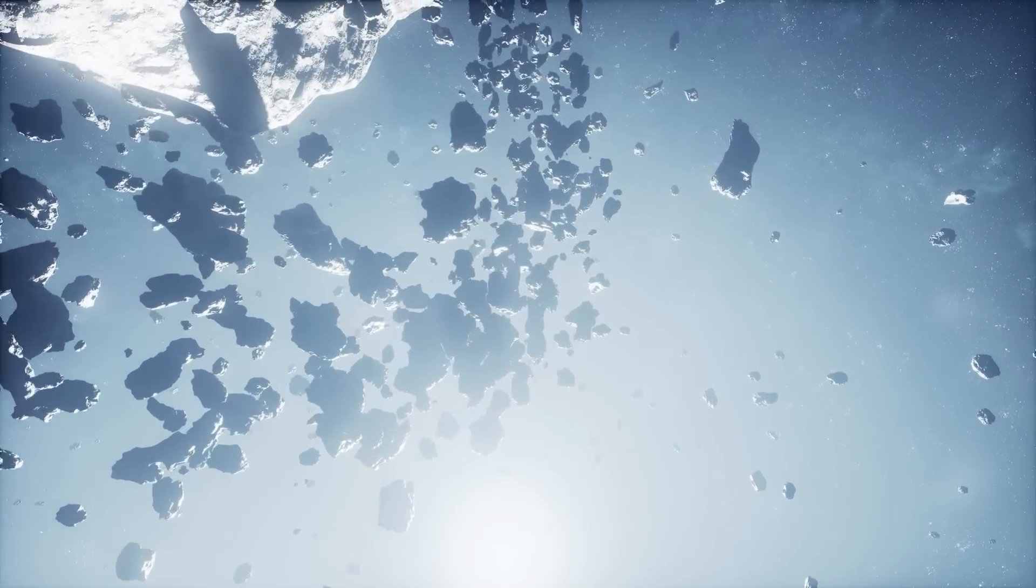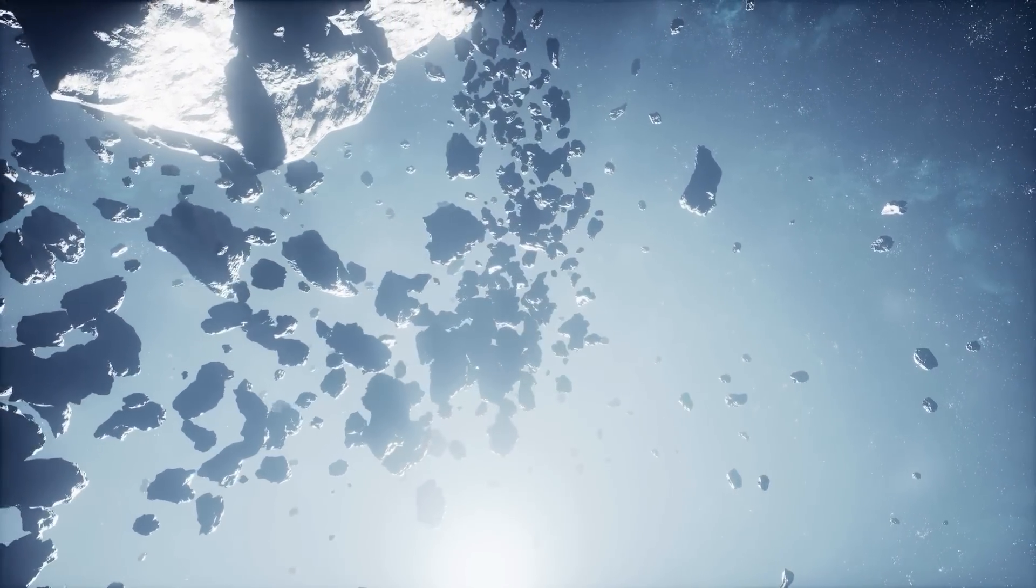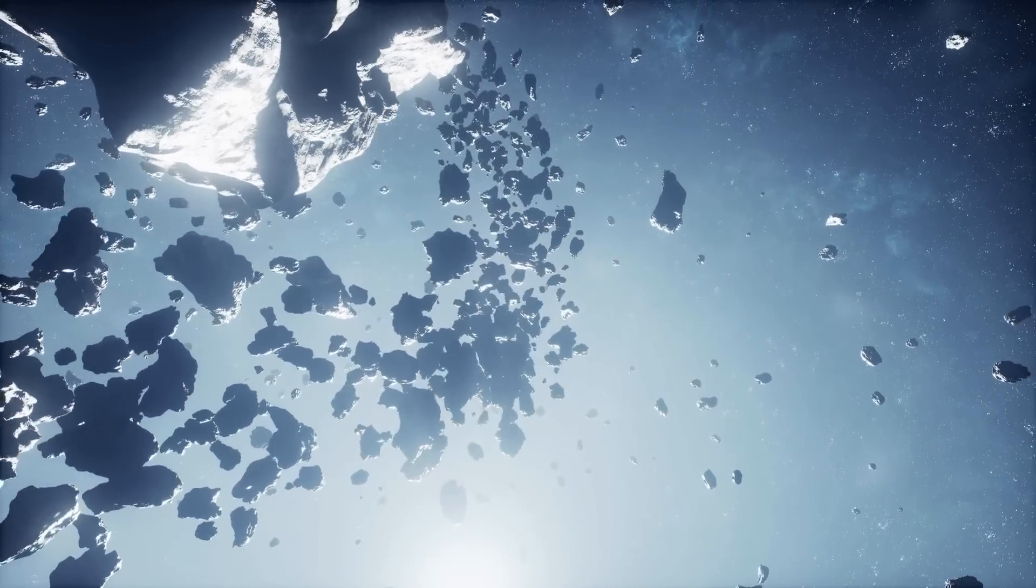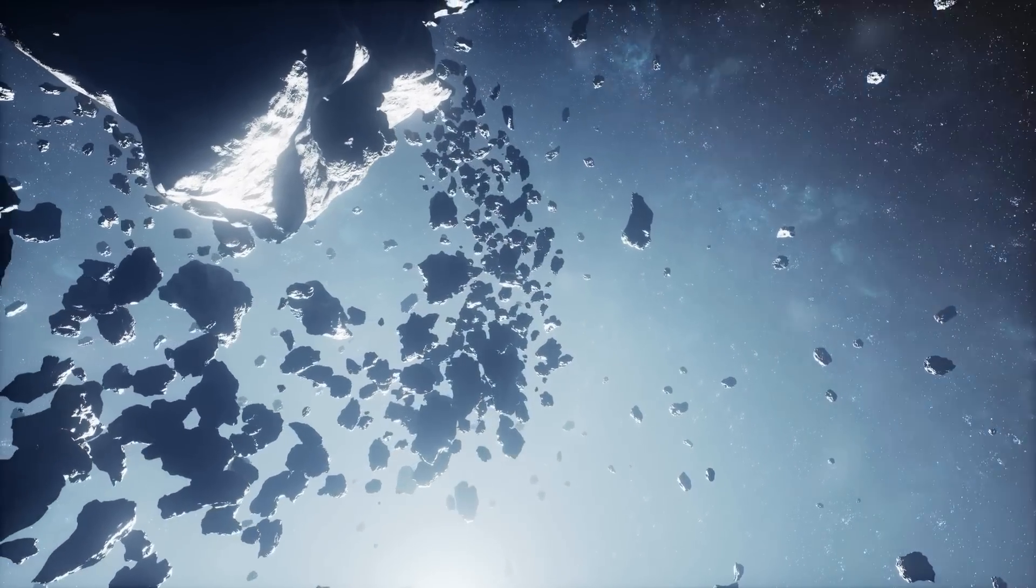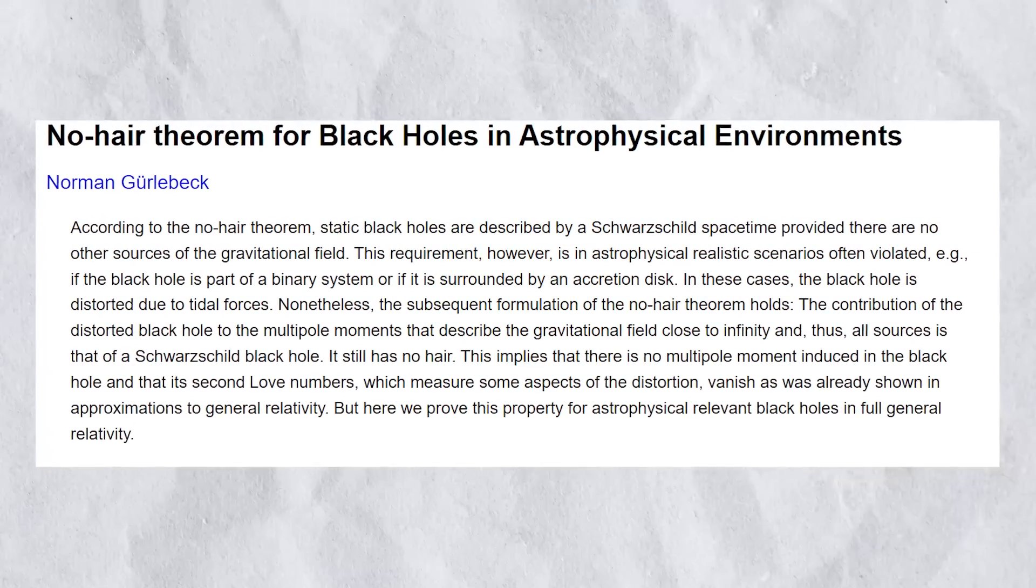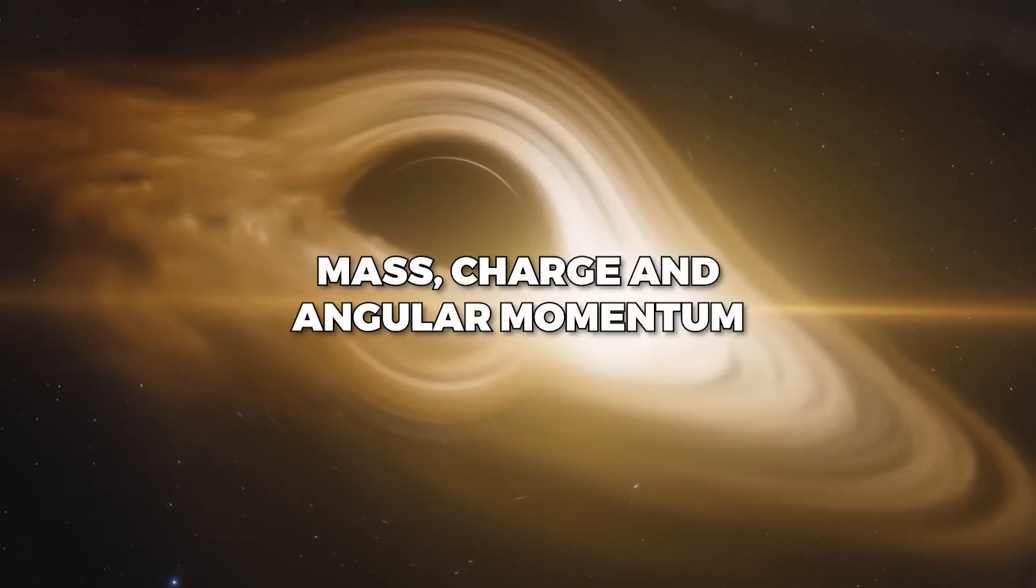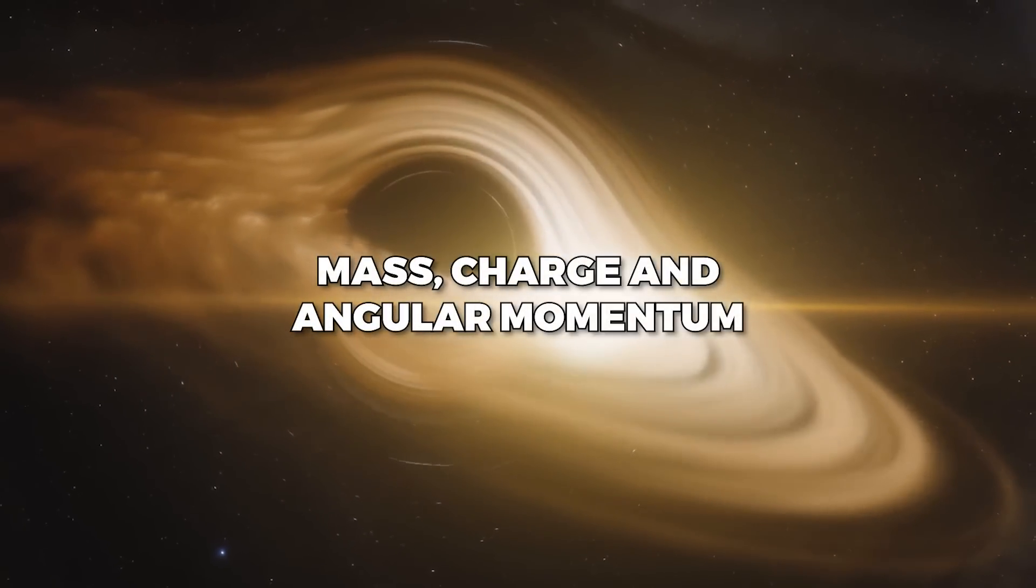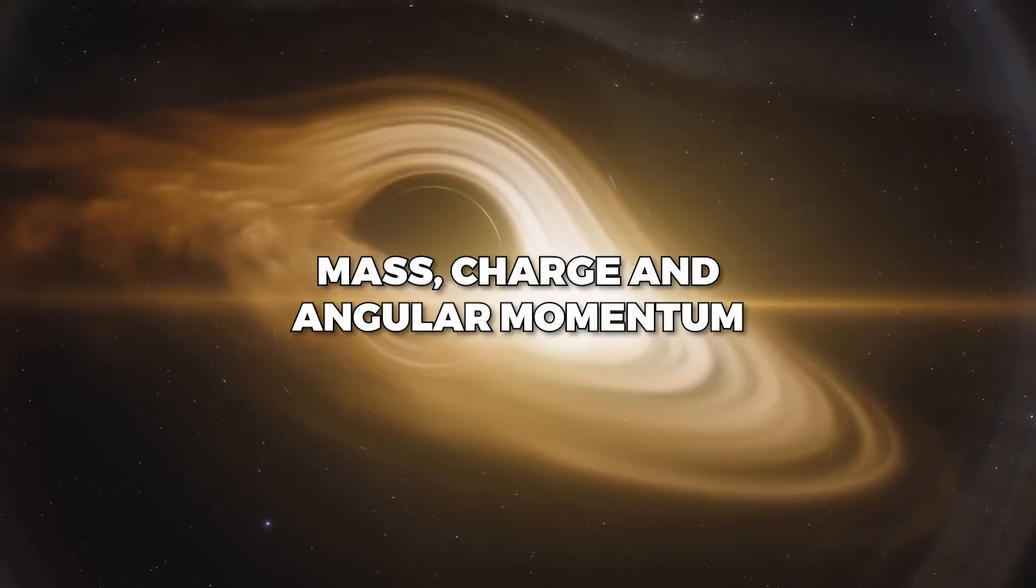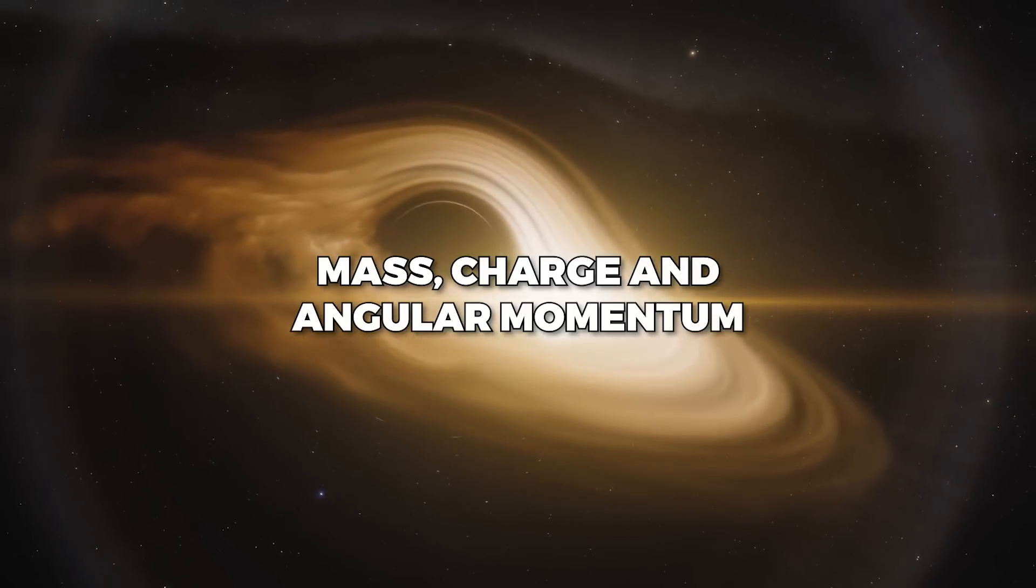There are several theories about how matter could be destroyed and its information lost forever once it goes beyond the event horizon of a black hole. One such theory is called the No-Hair theorem, which suggests that black holes have only three properties: mass, charge and angular momentum. According to this theorem, any other information about the matter that formed the black hole is lost forever.